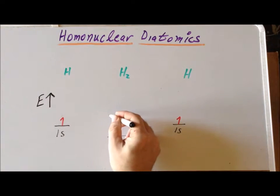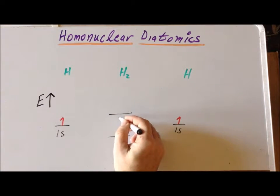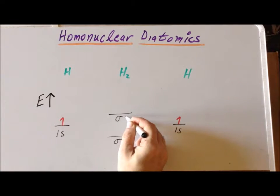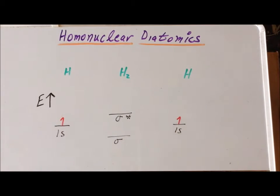And a higher energy antibonding orbital, which we denote as sigma antibonding. We denote the antibonding part by using an asterisk. This is relatively destabilized relative to the atomic orbitals of which it's composed.